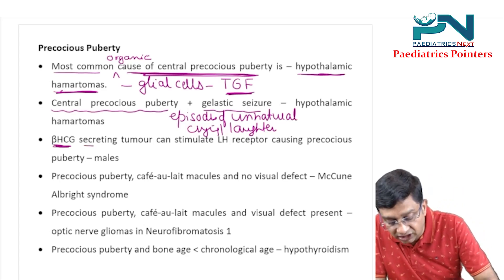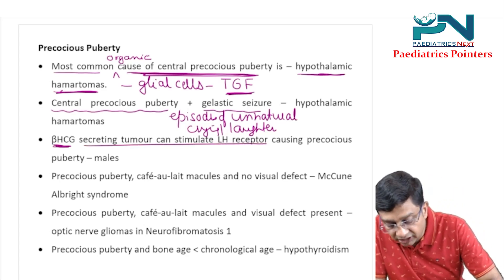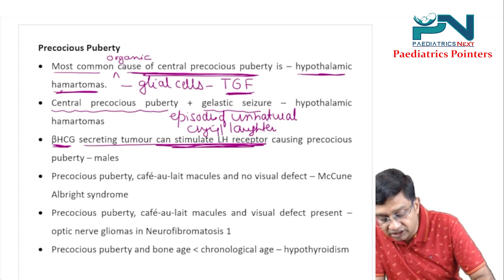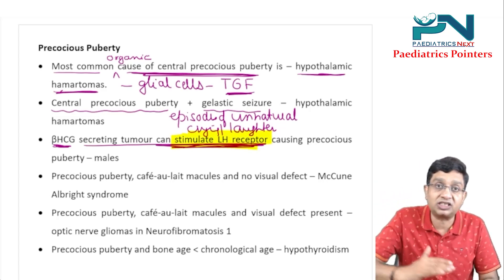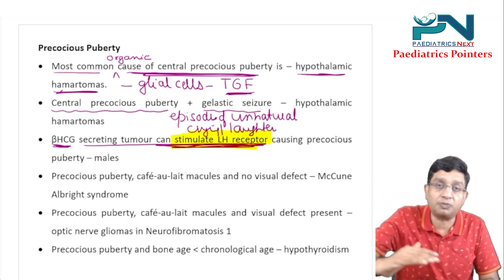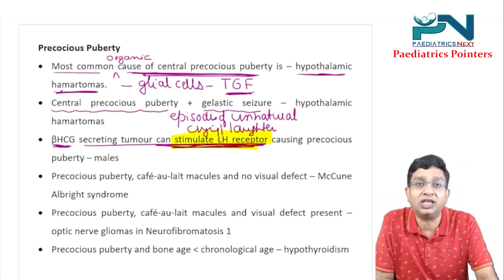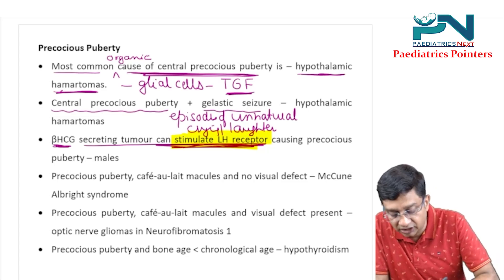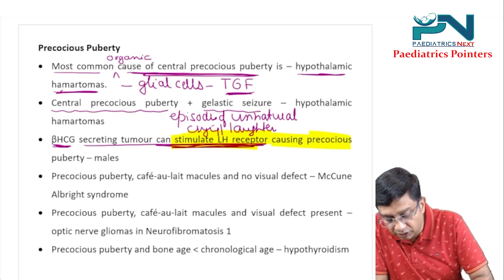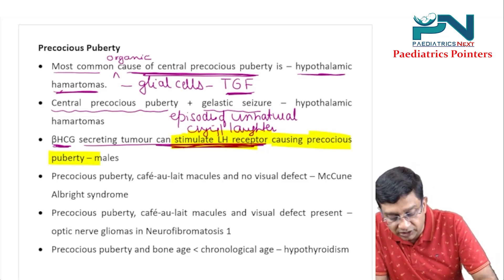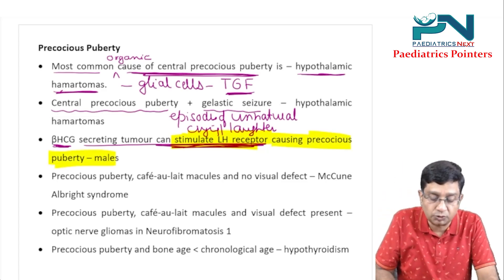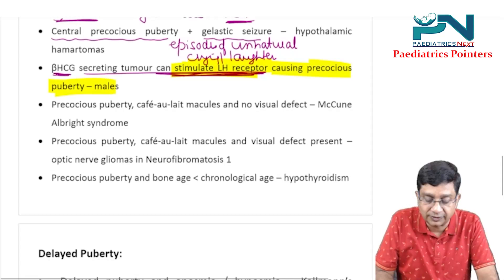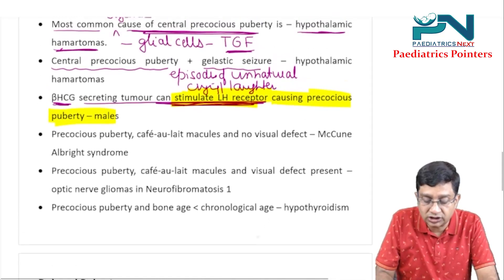Beta-hCG secreting tumors can stimulate the LH receptor. If beta-hCG increases in the body, it can stimulate the LH receptor, causing precocious puberty in males.